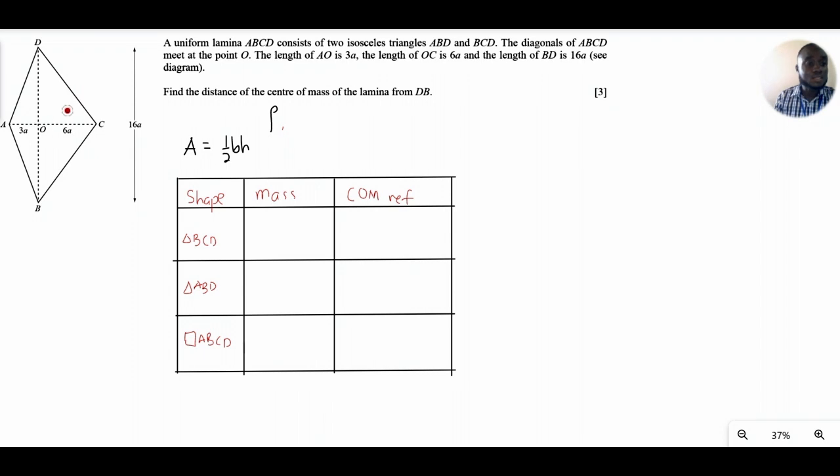Take the mass of the triangle ABD to be m. And if that's the case, since we've already agreed that the area of BCD should be twice as much as that of ABD, just have 2m as a mass of this, and the total mass in this case is going to be 3m.